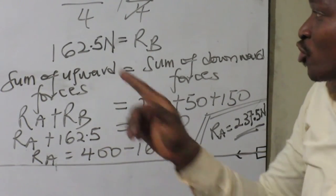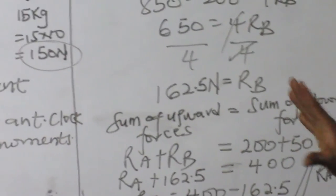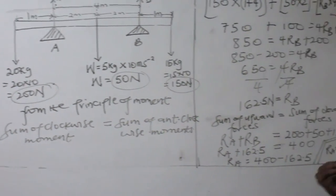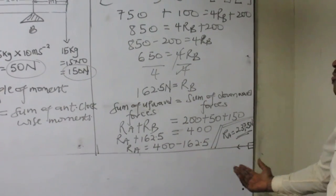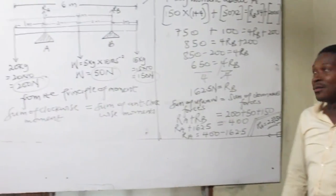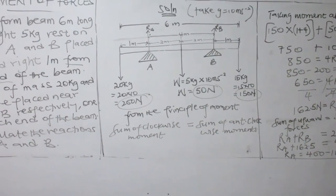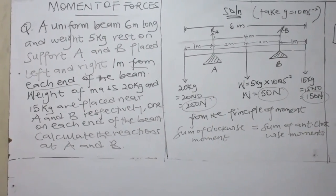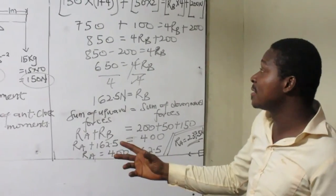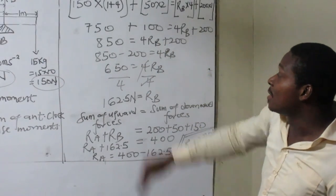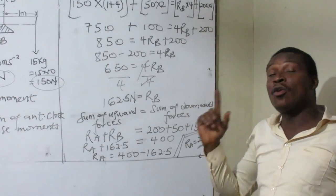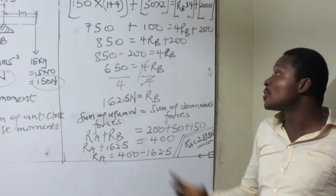So if you think the problem is how to draw, did you see the way I went through the drawing? Very simple. We used the two conditions necessary for forces to be in equilibrium together to find both RA and RB as the question demanded. That is moments of forces. Take your time and go through the video. Don't forget the stepwise measures taken to get this drawing, and don't forget the conditions necessary for forces to be in equilibrium.